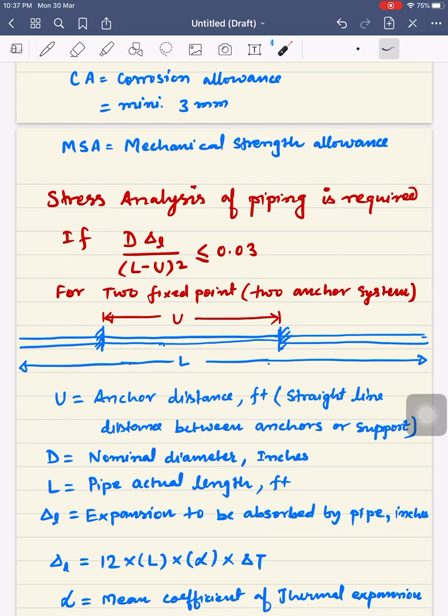Normally all the piping in industry are supported by anchors or piping supports. U is the supported span length. If the pipe has length L and supports are provided across the pipe length, the distance between two supports is U - the straight line anchor distance in feet.